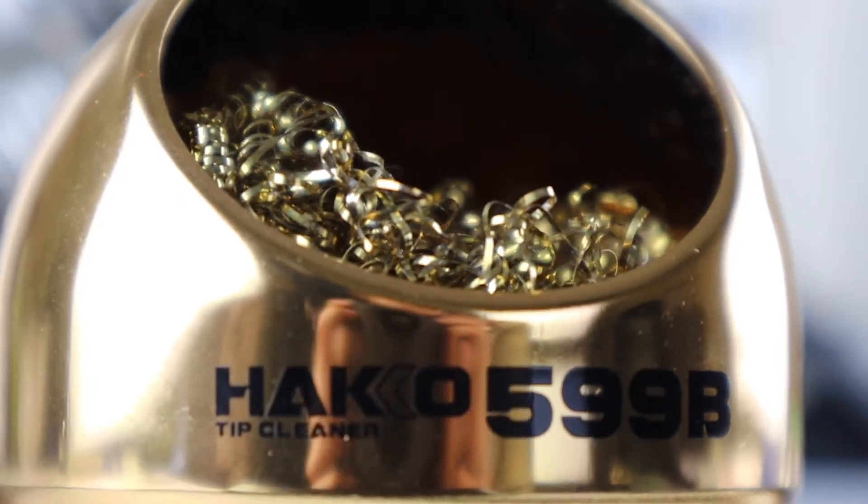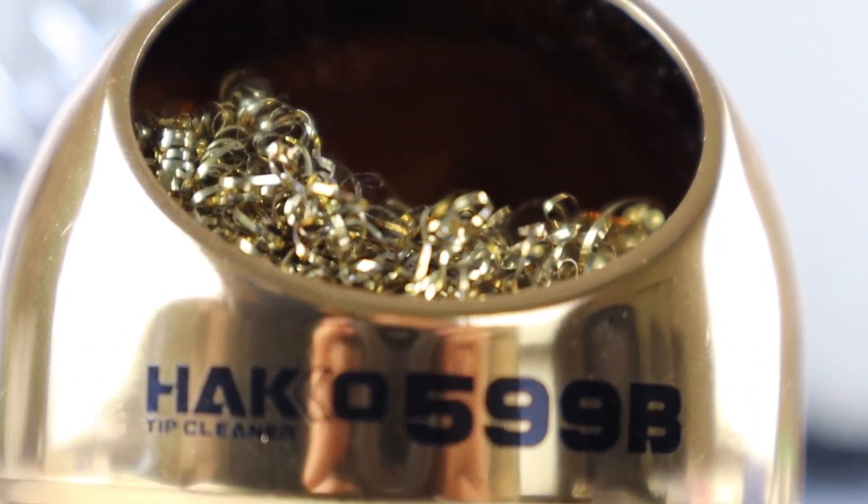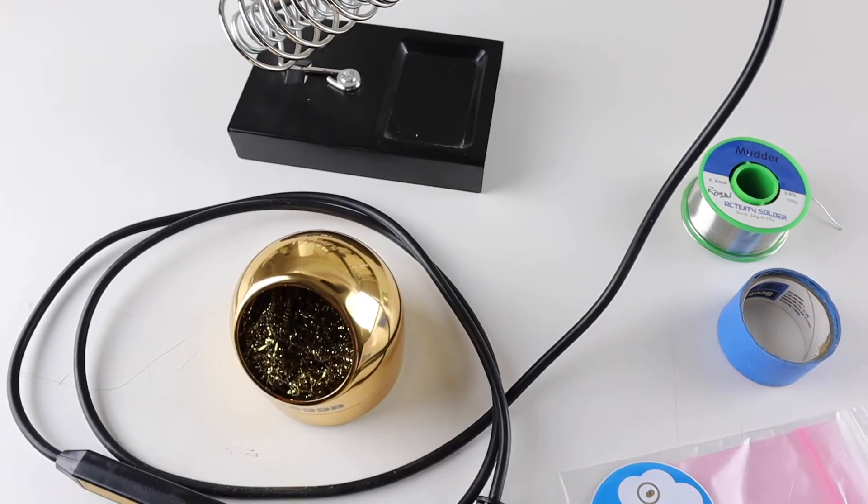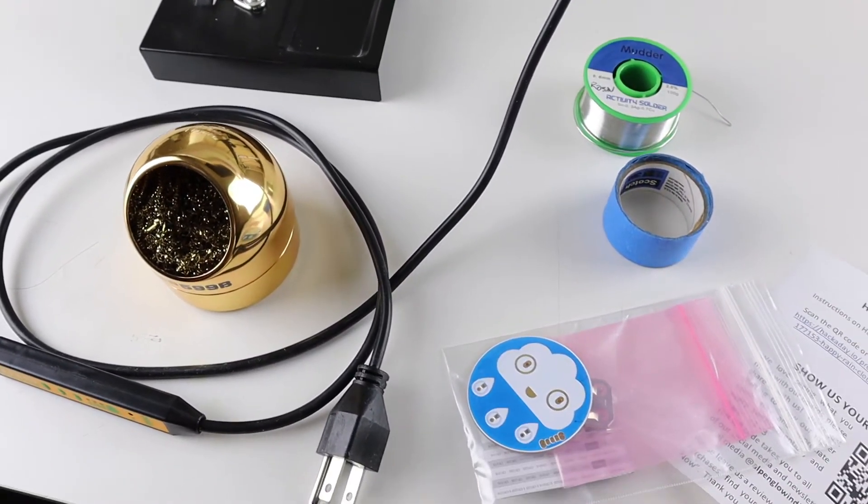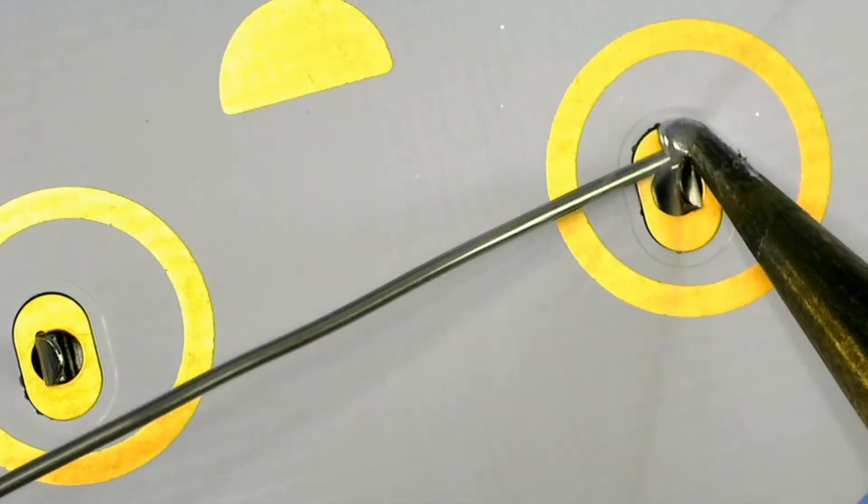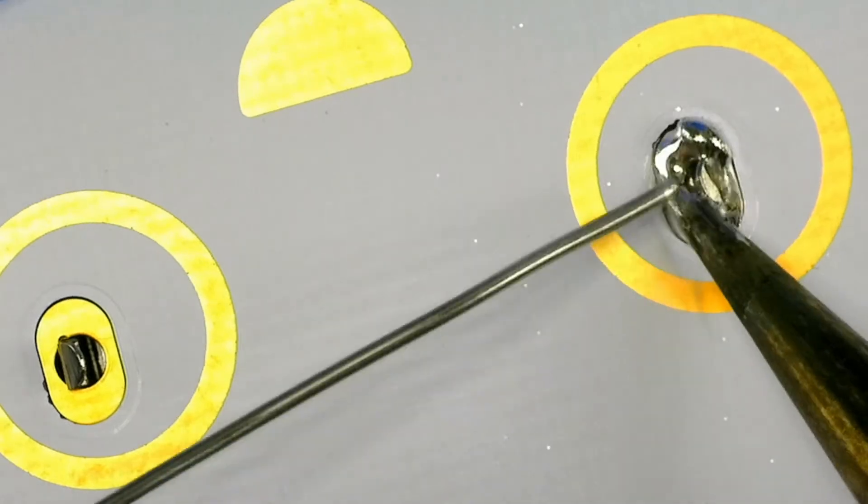Finally, you'll need a way to wipe off your tip. We like dry brass wool sponges better than wet sponges for prolonging tip life. You'll also need something to solder, like our Happy Rain Cloud Kit. Before grabbing your iron and diving in, it's helpful to know a bit about how soldering works and how to set yourself up for success.